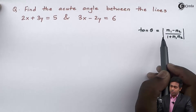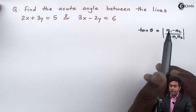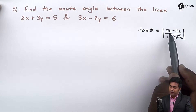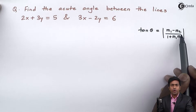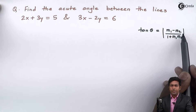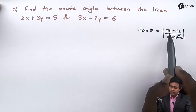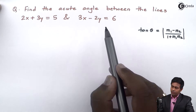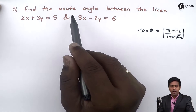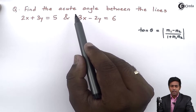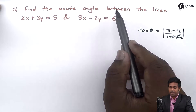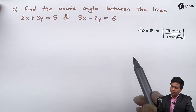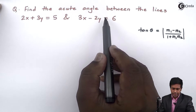To use this formula to find out the acute angle between the lines, we should know the value of m1 and m2, where m1 and m2 are the slopes of line 1 and line 2. So we'll first find out the slope of these two given lines.